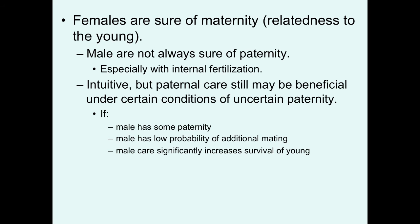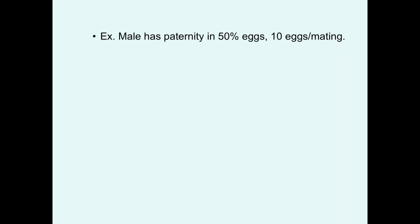Parental care might still be beneficial to males under certain circumstances if the following conditions are met: if the male has at least some paternity associated with the nest or clutch; if the male has a low probability of additional matings, meaning the costs of his parental care are greatly reduced; and if male care significantly increases the survival of the young. Let's work through an example to demonstrate circumstances where males may want to provide care.